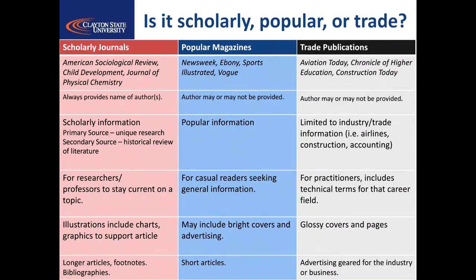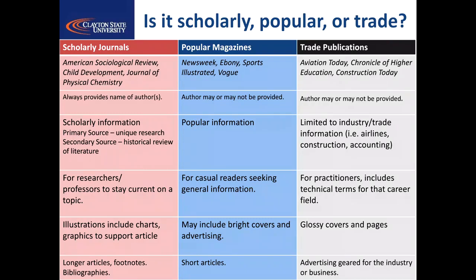The third column in this table represents yet another type of periodical, the trade publication. These are intended for people actually working in a given field, and there are trade titles for just about any profession you'd care to name, from dentistry to accounting to librarianship to commercial aviation. These journals are intended to help you do your job well and will include news announcements and interviews specifically relevant to people who do whatever it is for a living. There may be times when they are useful for your scholarly research, but that's not their main focus.